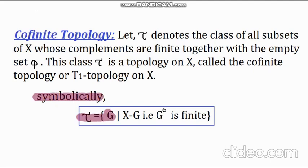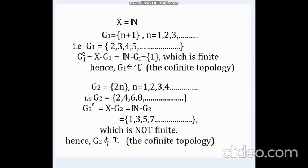And symbolically, τ consists of all such sets G, such that X minus G is finite. That is the complement of G is finite. Now the idea of co-finite topology seems to be very ambiguous to most of the students in the very beginning. So, to make this clear, let us see some examples.